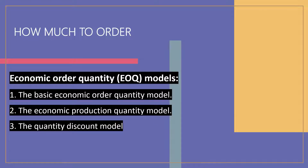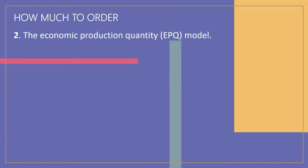The basic economic order quantity model was explained in the previous video. Now the economic production quantity (EPQ) model will be discussed. This model is used in batch production mode and is widely used in production — even in assembly operations where portions of the work are done in batches. The reason for this is that in certain instances the capacity to produce a part exceeds the part's usage or demand rate. As long as production continues, inventory will continue to grow. In such instances it makes sense to periodically produce such items in batches or lots instead of producing continually. The EPQ model has the same assumptions as the basic EOQ model except that instead of orders received in a single delivery, units are received incrementally during production.